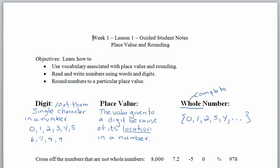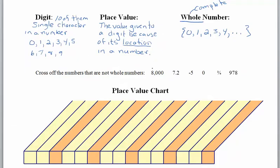Pause the recording and see if you can cross off some of the numbers in the list that are not whole numbers. Is 8,000 a whole number? Yes — it's a large number but doesn't have any parts or fractions. 7.2 is not a whole number; the decimal point ruins it. Negative 5 is also not a whole number — negatives aren't allowed. Zero is a whole number; that's where the whole numbers begin. Three fourths is not a whole number — no parts allowed. 978 is definitely a whole number. So whole numbers cannot have any decimals, no fractions, and no negatives.